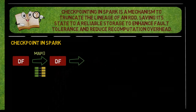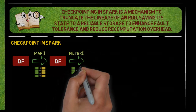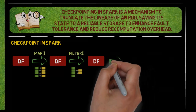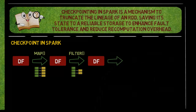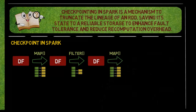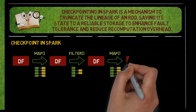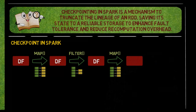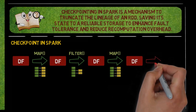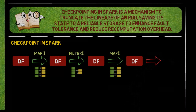Suppose there are multiple operations performed on a DataFrame — if any one of the operations fails in between, Spark will recompute the entire operations once again. We can add checkpoints in between these operations, so that if any failure occurs after the checkpoint, Spark will recompute the data from the checkpoint rather than from the beginning.